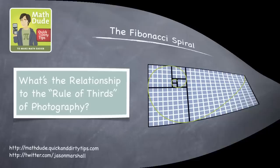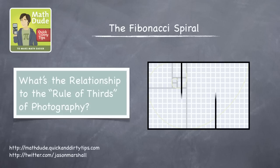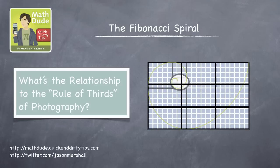But how does that relate to the rule of thirds in photography? Well, let's take our spiral and divide the image into thirds, both vertically and horizontally. Notice that the intersection of the two lines in the top left is pretty close to the eye of the golden spiral.